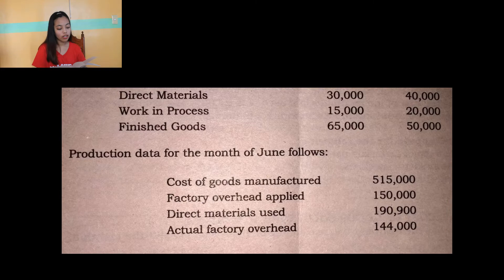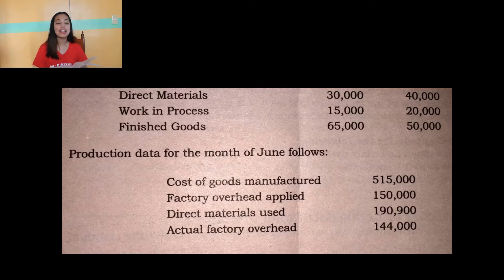Next problem is Maria Corporation provided the following inventory balances and cost data for the month of July. For July 1: direct materials are P30,000, work in process P15,000, and finished goods is P65,000. For July 31: materials of P40,000, work in process of P20,000, and finished goods of P50,000.